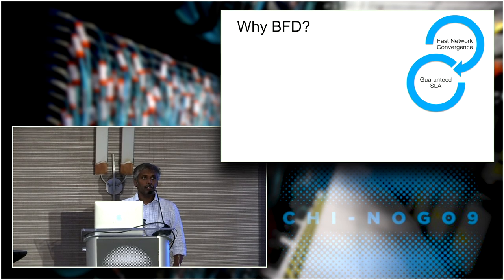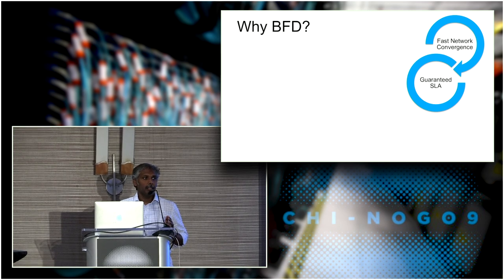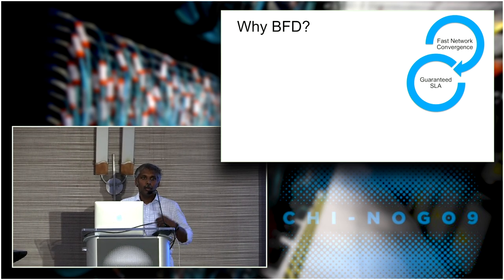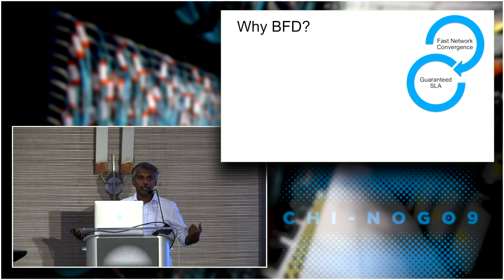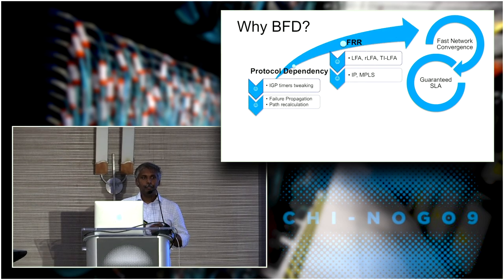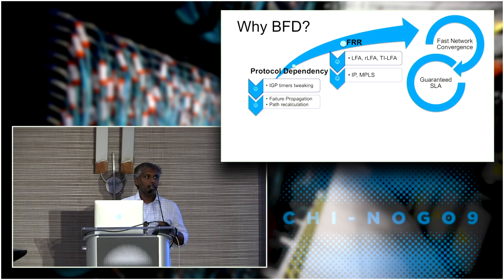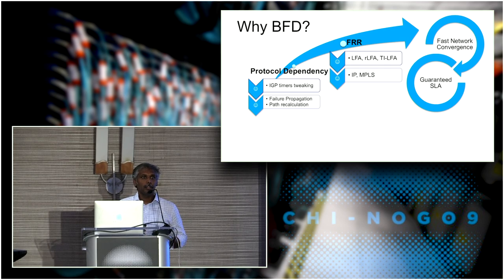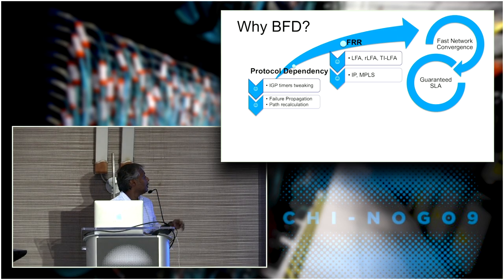When I say fast routing convergence, it's basically the ability to recompute the path whenever there is a failure and have unified forwarding visibility among all devices in the network, so we don't have microloops because one router has converged and another has not. You can try to tweak IGP protocols — how fast can you propagate the network failure to other devices, or how fast can you recompute the path once you receive a notification from neighbors.